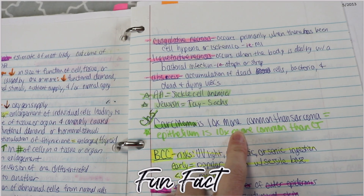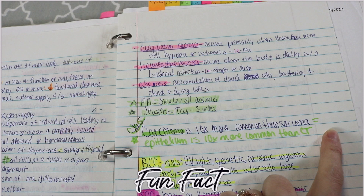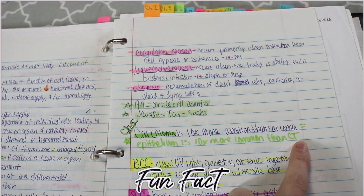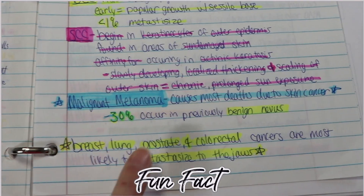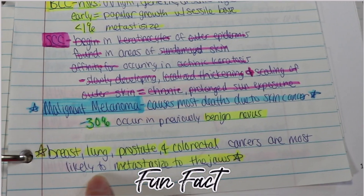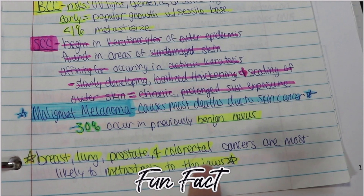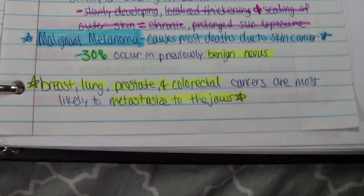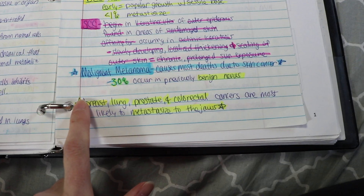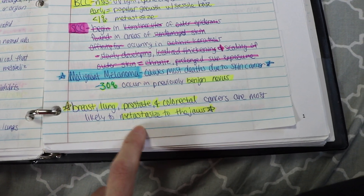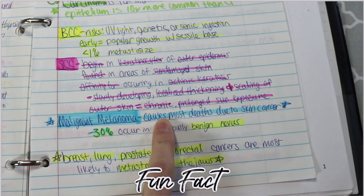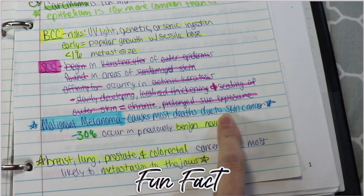Carcinoma is 10 times more common than sarcoma, and epithelium is 10 times more common than connective tissue. Another fun fact: breast, lung, prostate, and colorectal cancers are the most likely to metastasize to the jaws. This is another important reason why we have to update patients' medical history — we have to make sure we are frequently checking their jaw. Malignant melanoma causes most deaths due to skin cancer.